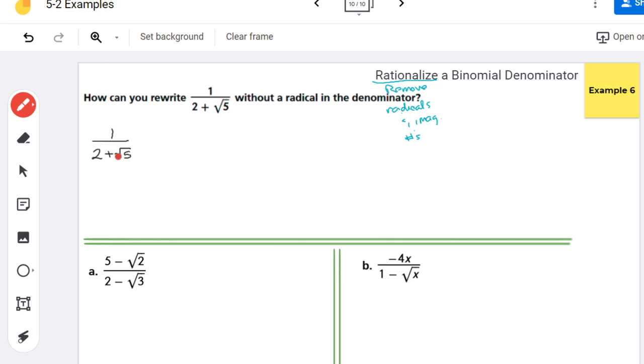So really, the way that we rationalize a denominator is we multiply by the number 1, because 1 times any number does not change what that number is.